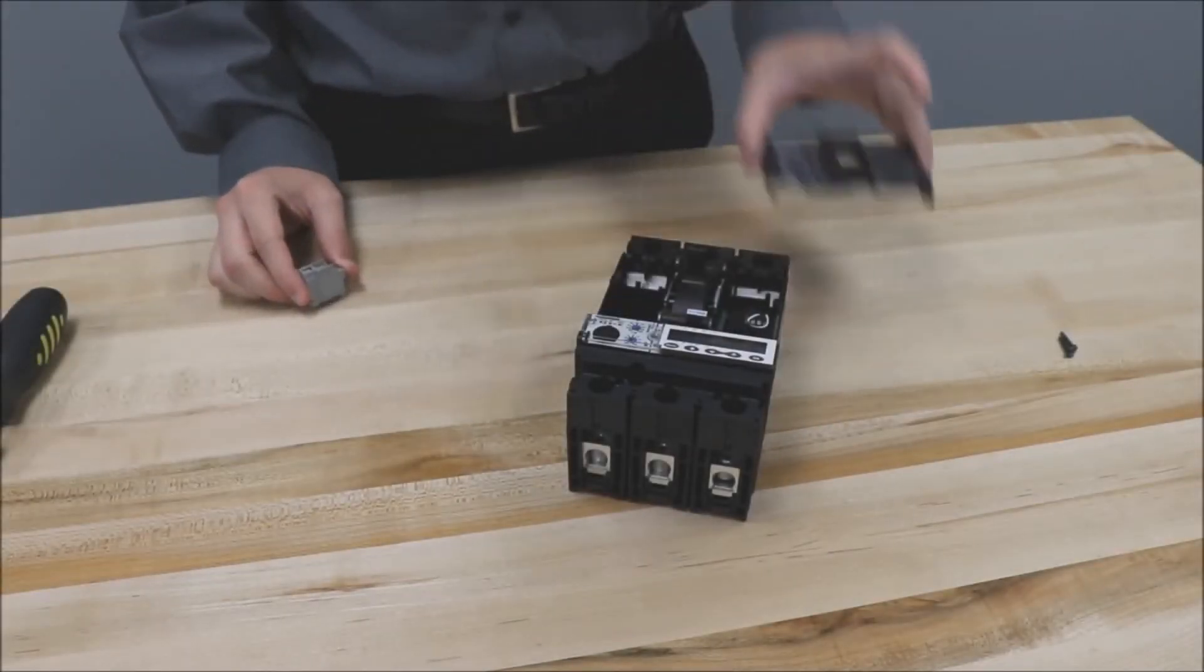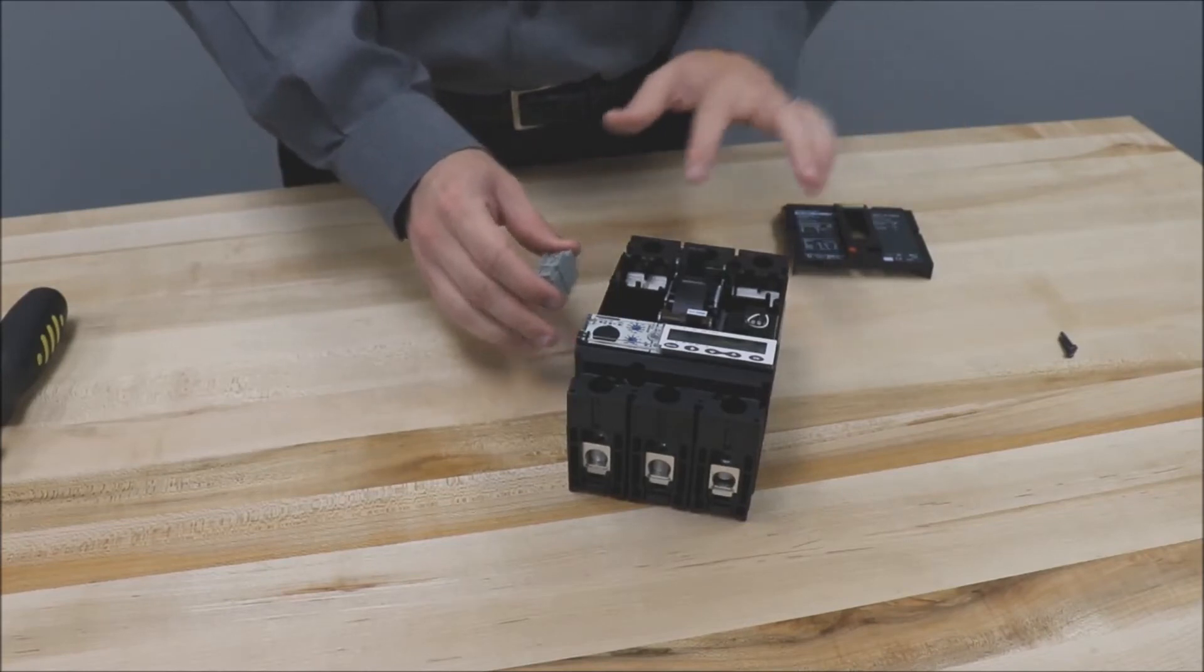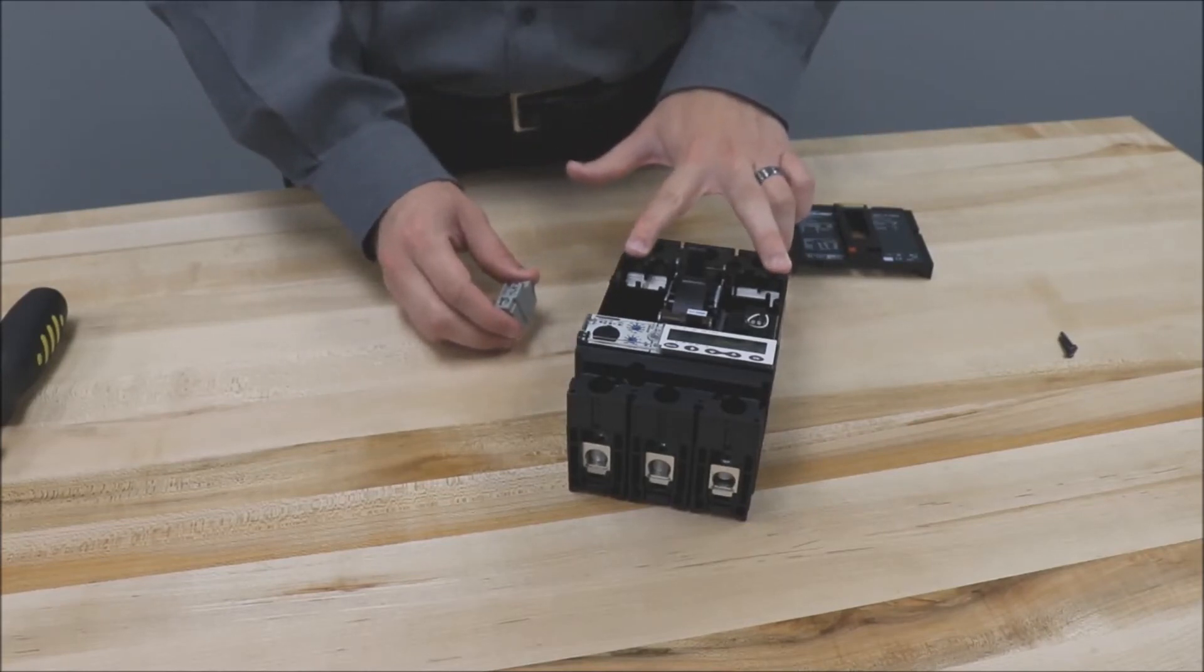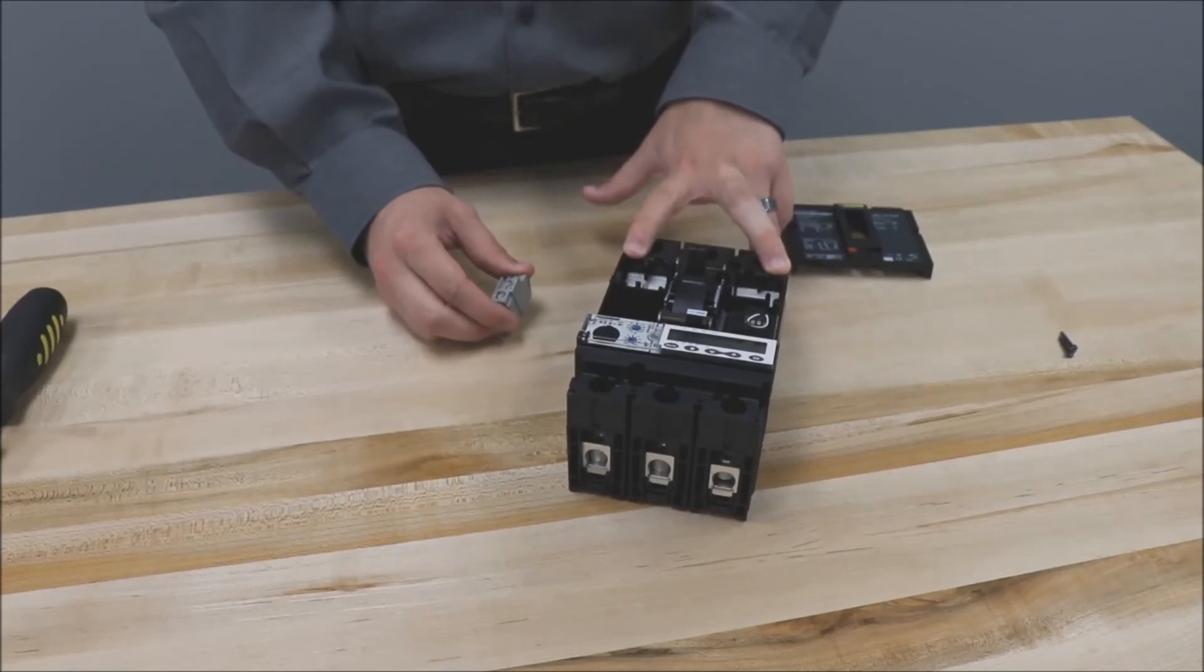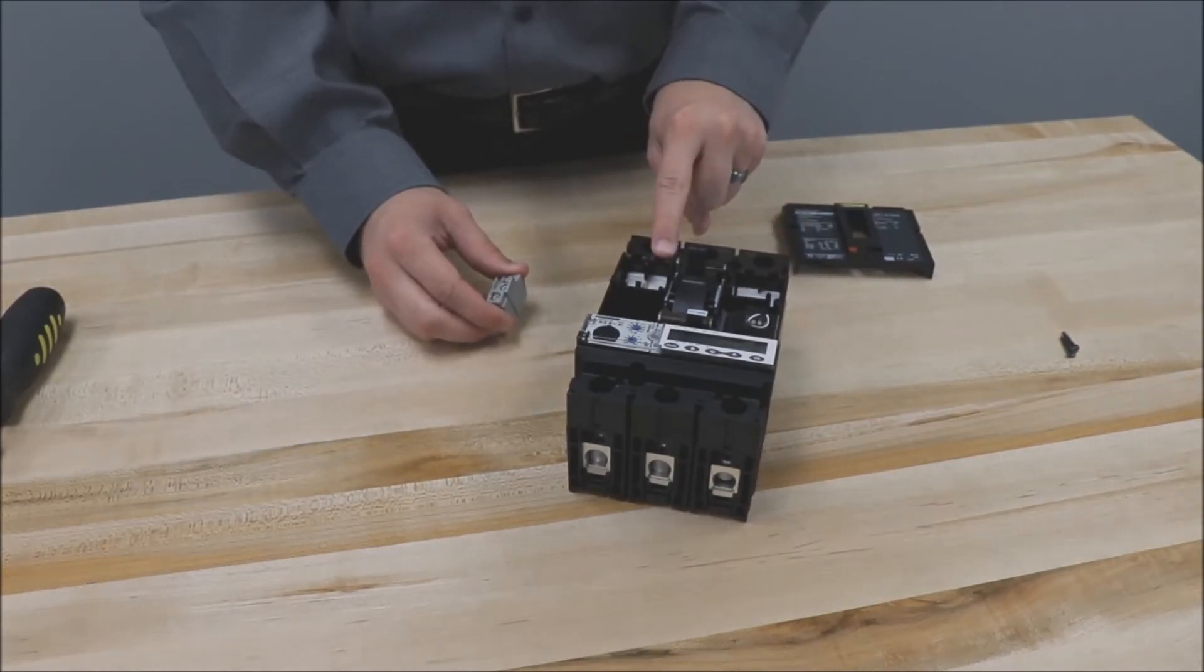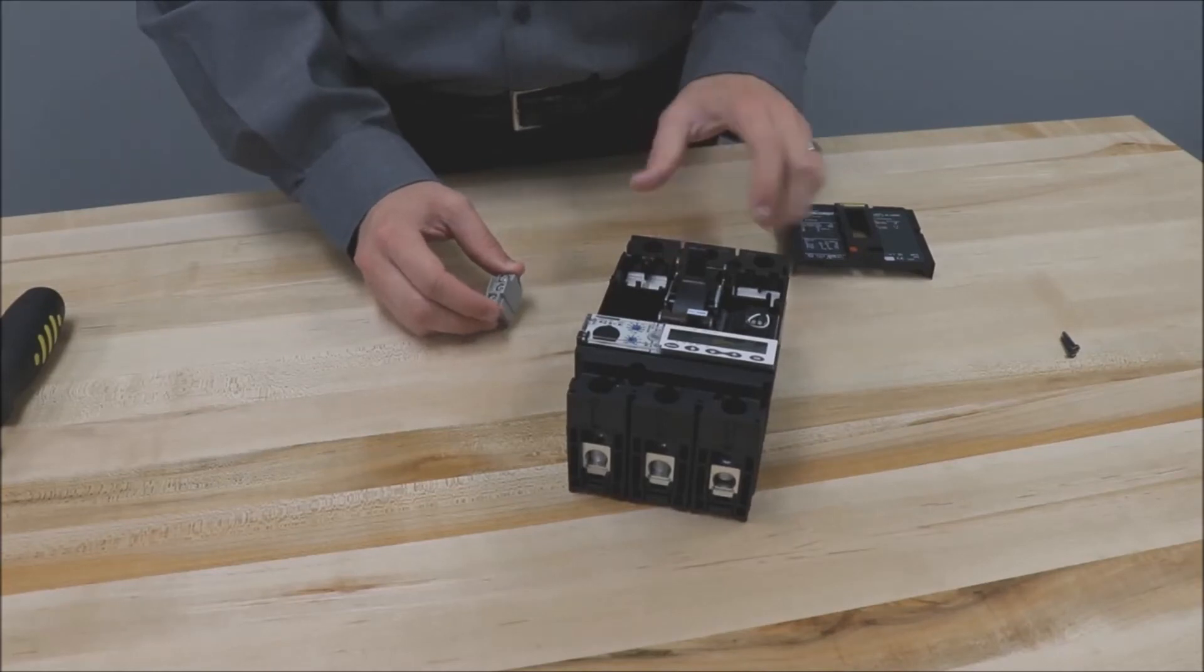Remove the cover and then place the switch in either one of these two slots for the OF or auxiliary switch function or this slot for the SD or alarm switch function.